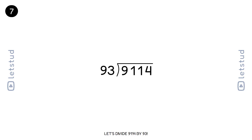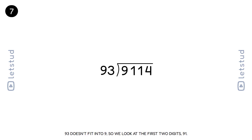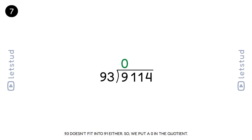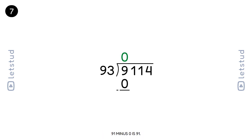Let's divide 9114 by 93. We start with the digit 9. 93 doesn't fit into 9, so we look at the first two digits, 91. 93 doesn't fit into 91 either, so we put a 0 in the quotient. 91 minus 0 is 91.